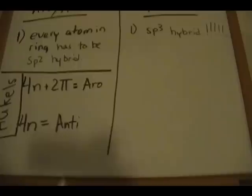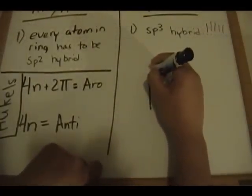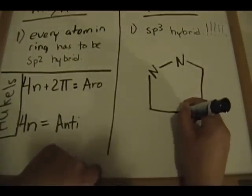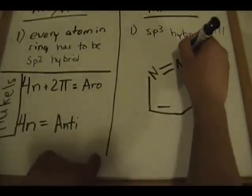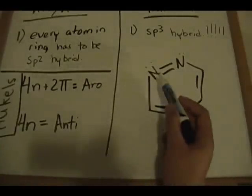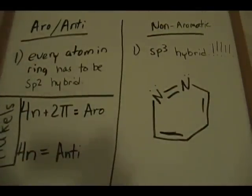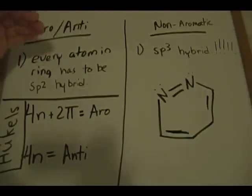Let's work through this example. Nitrogen is probably one of my favorite atoms. The best thing to do is stop the video and try to figure this out on your own first. So first things first — check if everything is sp2 hybridized in this molecule. sp2, sp2, sp2, sp2, sp2, sp2, sp2. Every atom in the ring is sp2 hybridized, so we move past the non-aromatic category.